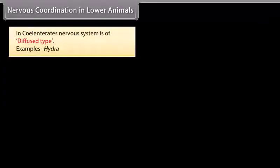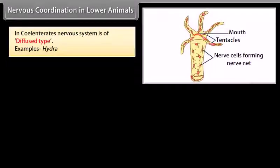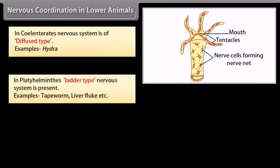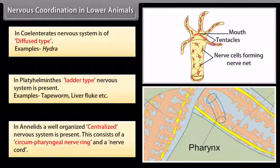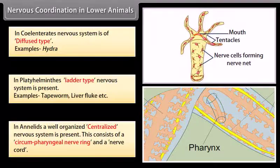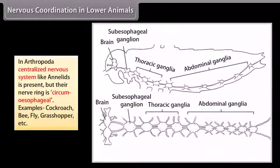Nervous coordination in lower animals. In coelentrates, the nervous system is of diffused type — example: Hydra. In platyhelminthes, ladder-type nervous system is present — examples: tapeworm, liver fluke, etc. In annelids, a well-organized centralized nervous system is present, consisting of a circumfaryngeal nerve ring and a nerve cord. In arthropoda, a centralized nervous system like annelids is present, but their nerve ring is circumesophageal.